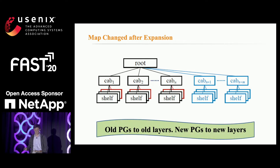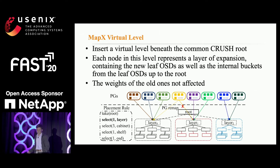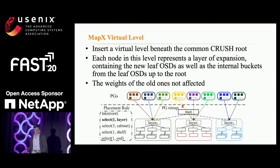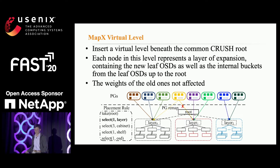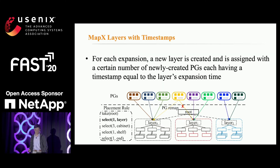Old PGs are mapped to old layers and new PGs to new layers. To support this new time dimension mapping with minimum modification to CRUSH, we insert a virtual level beneath the common CRUSH root where each virtual node represents a layer of expansion. For example, where we add two layers — one red and one blue — they are added beneath the root as two layers. This virtual layer enables MapX to realize migration-free expansion by mapping new objects to the new layer before further processing by the CRUSH algorithm. Since the new layer does not affect the weights of old ones, the placement of old objects within the old layer will not change.